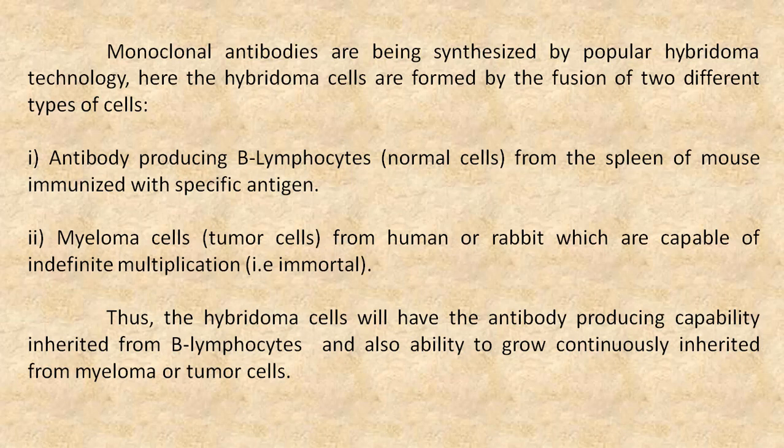Thus, the hybridoma cells will have the antibody-producing capability inherited from B lymphocytes, and also the ability to grow continuously inherited from myeloma or tumor cells.